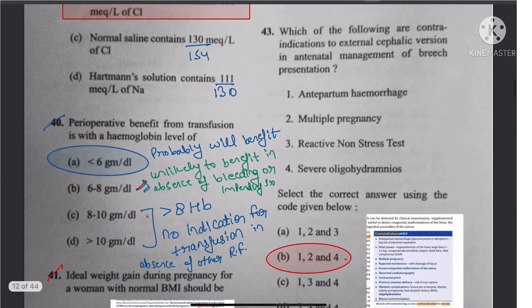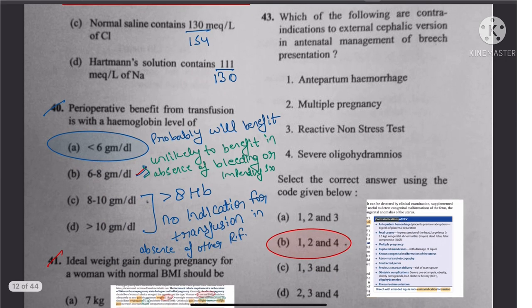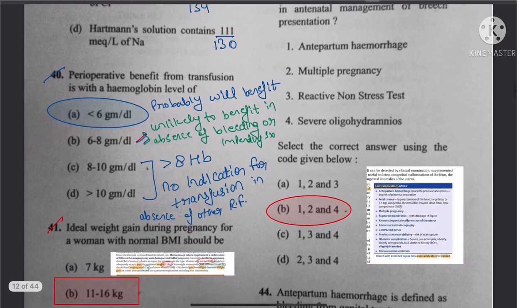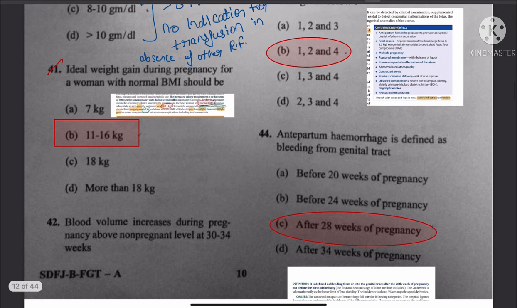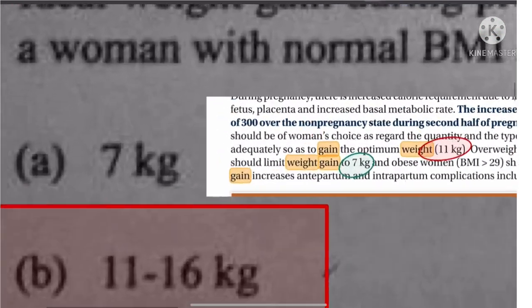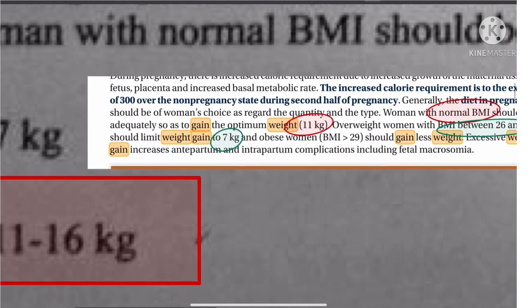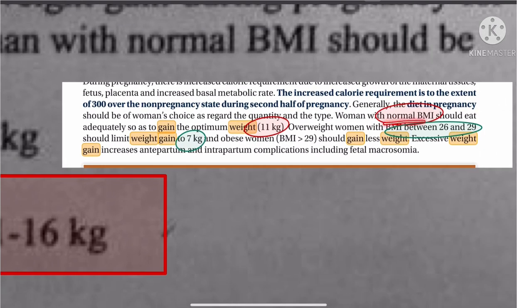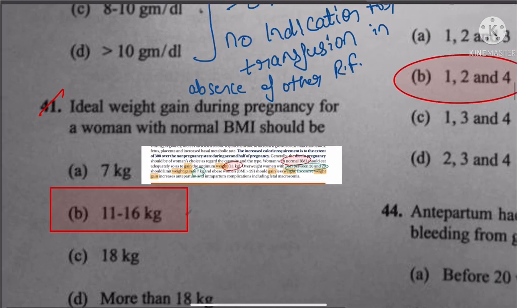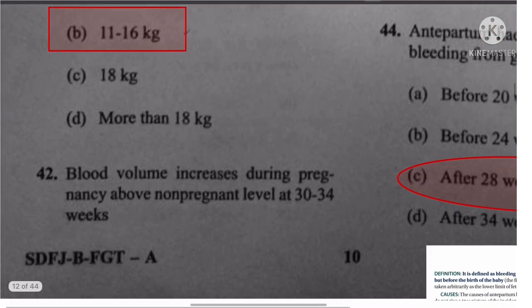Question 40: Perioperative benefit from transfusion is with a hemoglobin level of less than 6 g/dL. Question 41: Ideal weight gain during pregnancy for a woman with normal BMI — from Datta, a normal BMI woman should gain 11 kg, and if BMI is 26 to 29, weight gain should be 7 kg. UPSC will consider answers from Datta for OBG.